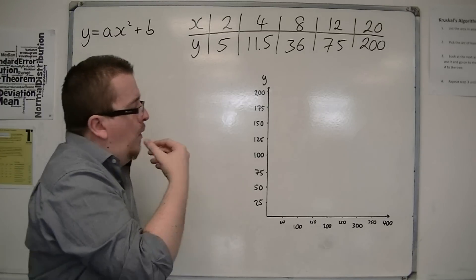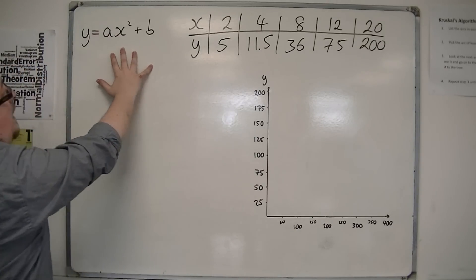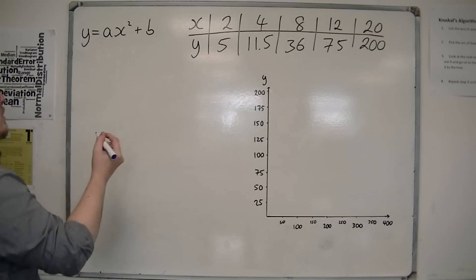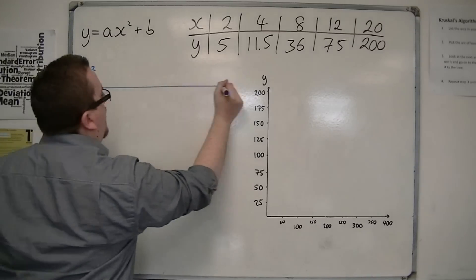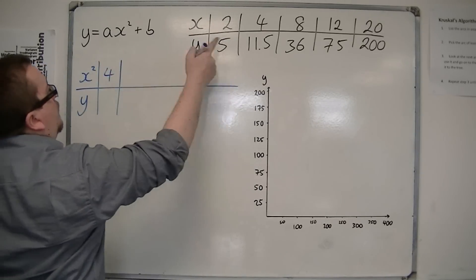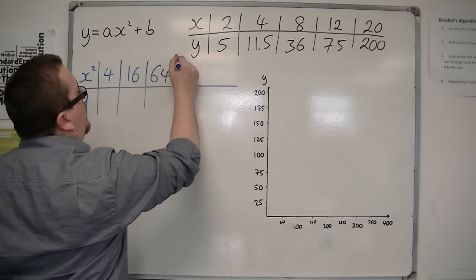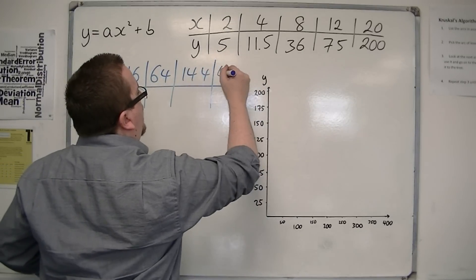So what we're going to do is we are going to plot this data as x squared and y. So I'm actually going to plot the data of x squared and y. So we're going to have 2 squared is 4, 4 squared is 16, 8 squared is 64, 12 squared is 144, and 20 squared is 400.